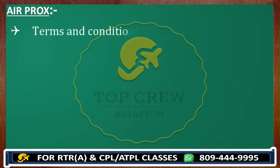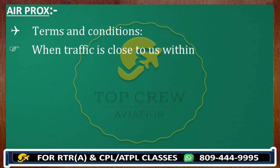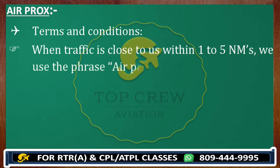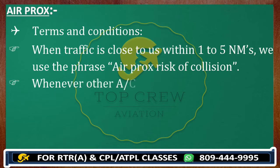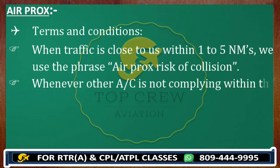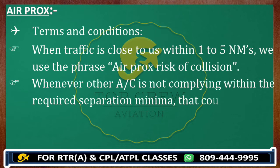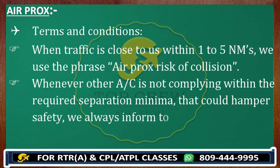There is a certain format to inform ATC about AIRPROX. There are two terms and conditions. Number one: when traffic is close to you within one to five nautical miles, we use the phrase 'AIRPROX risk of collision.' Number two: when another aircraft is not complying within the required separation minima and that could hamper safety, we use the phrase 'AIRPROX safety not assured.'